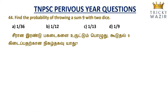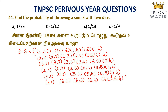Find the probability of throwing a sum of 9 with 2 dice. When we throw two dice, the sample space ranges from (1,1) up to (6,6), giving a total of 36 outcomes. We need to find all combinations of two dice that add up to 9.